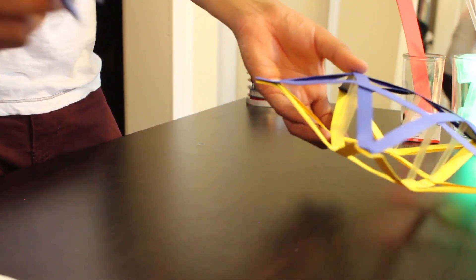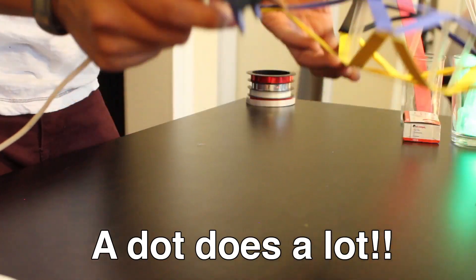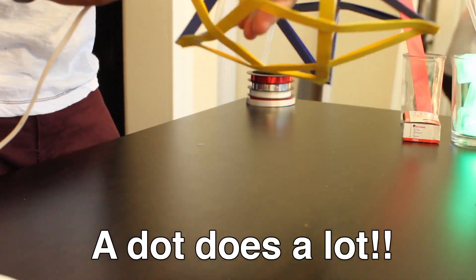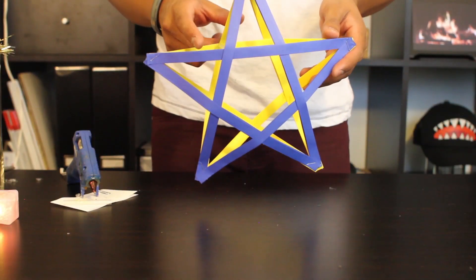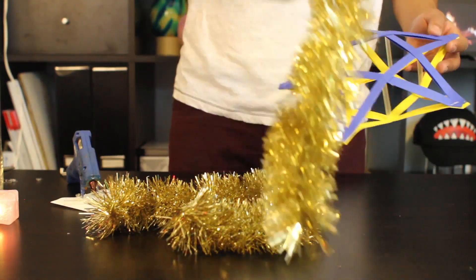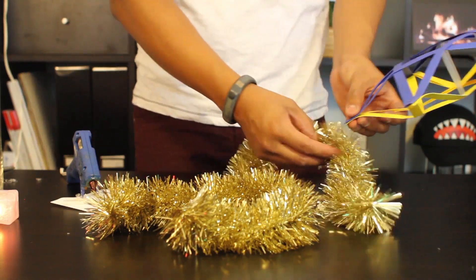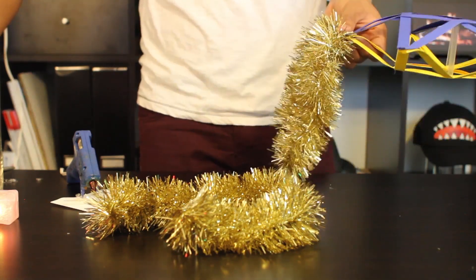Remember, be very careful when using a hot glue gun, and a dot does a lot. Once your straws have set and cooled, take your tinsel and attach it to the two bottom points of your star.